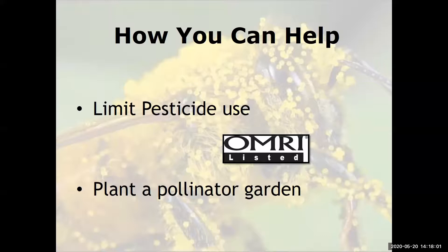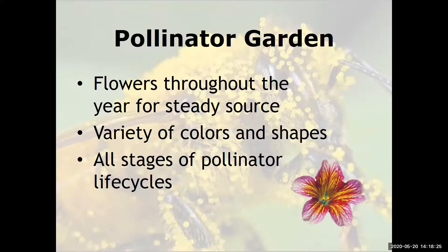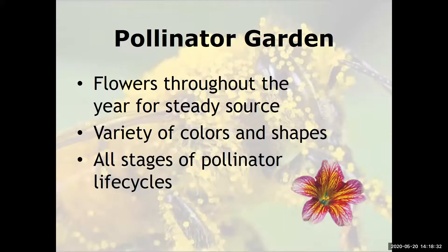Plant your pollinator garden with flowers throughout the year for a steady source of nectar and pollen. With a little research, you can have color and food for insects from spring to fall, in all varieties of colors and shapes, supporting all stages of the pollinator life cycle.